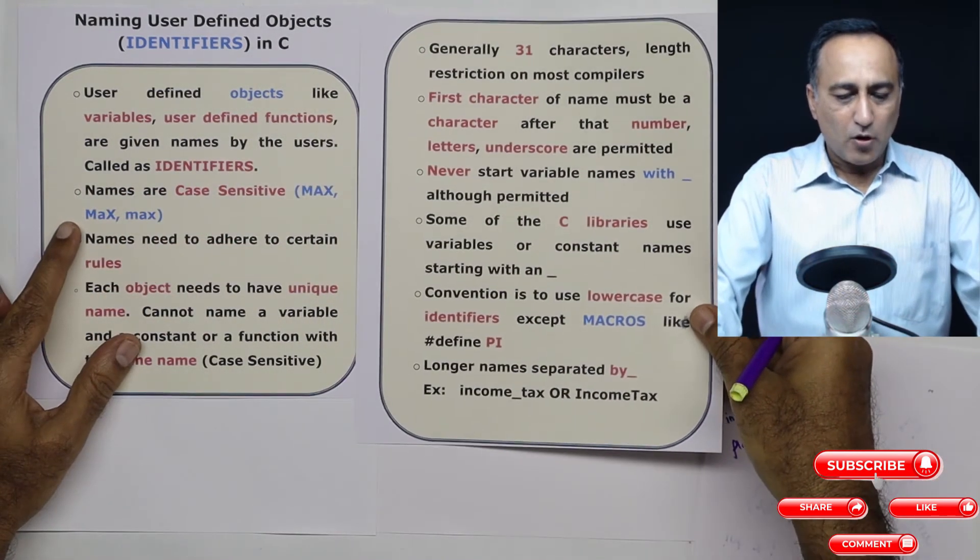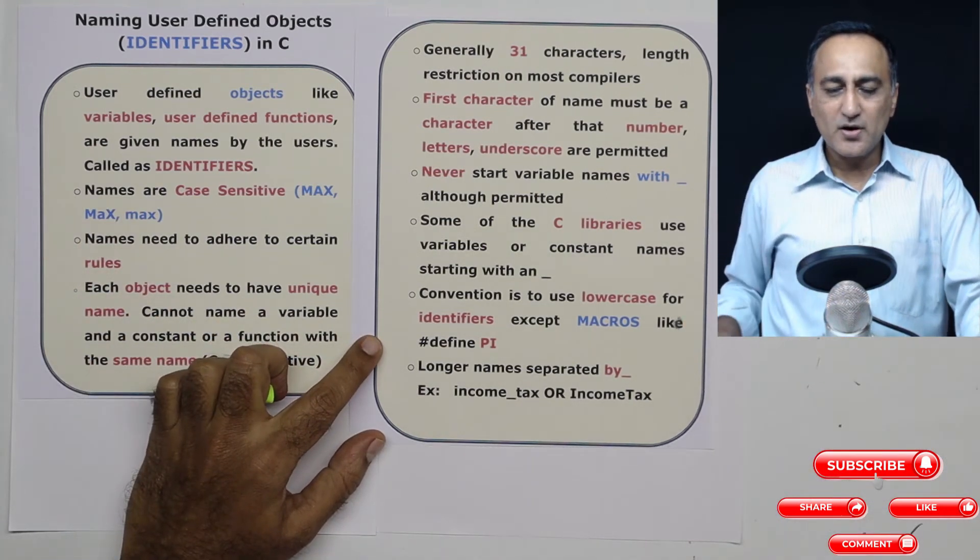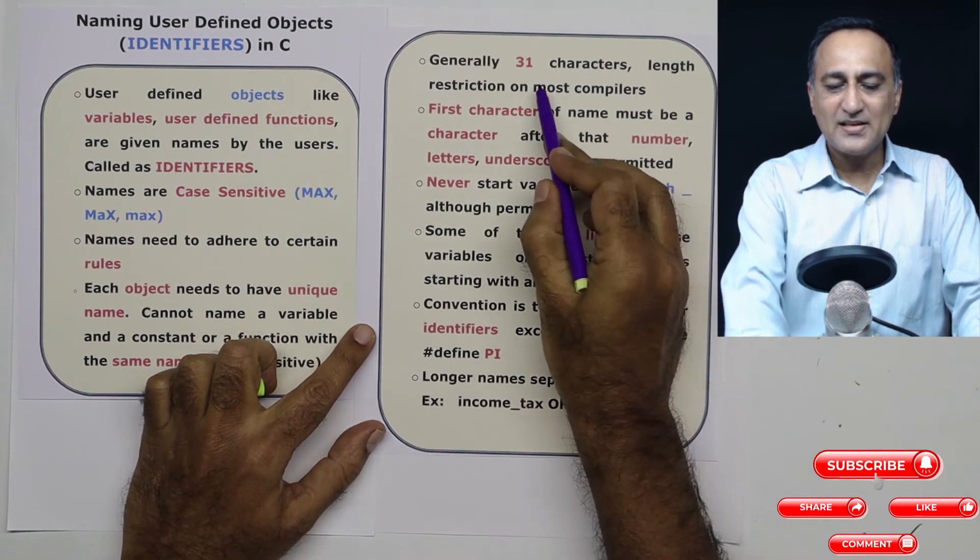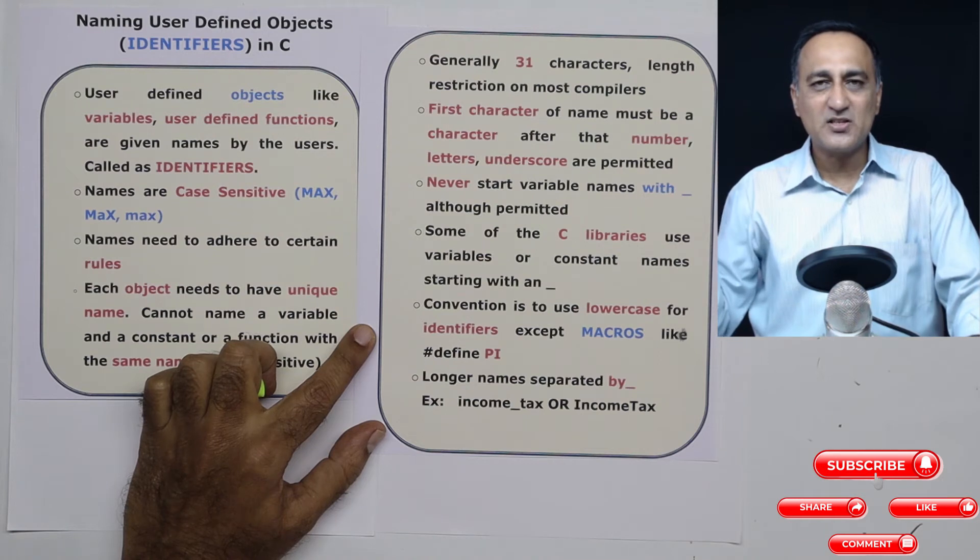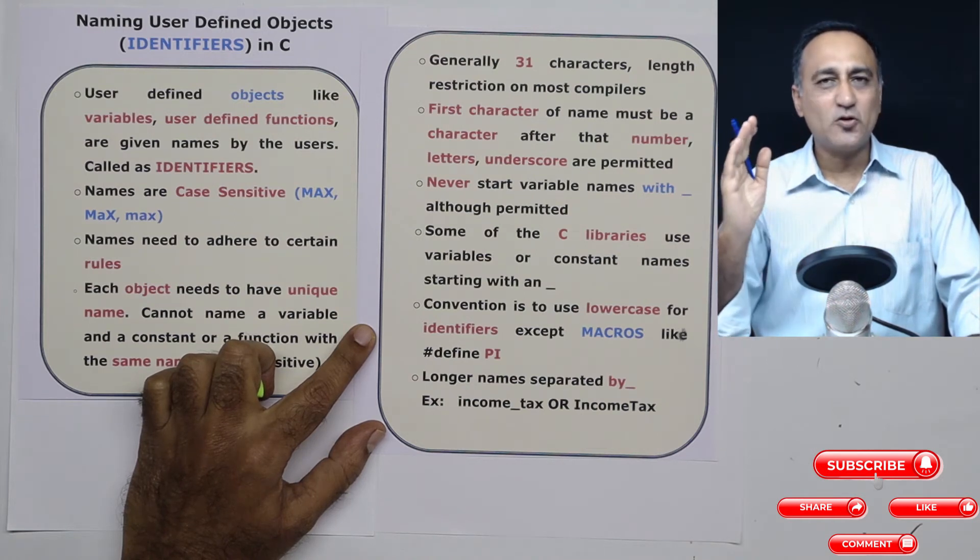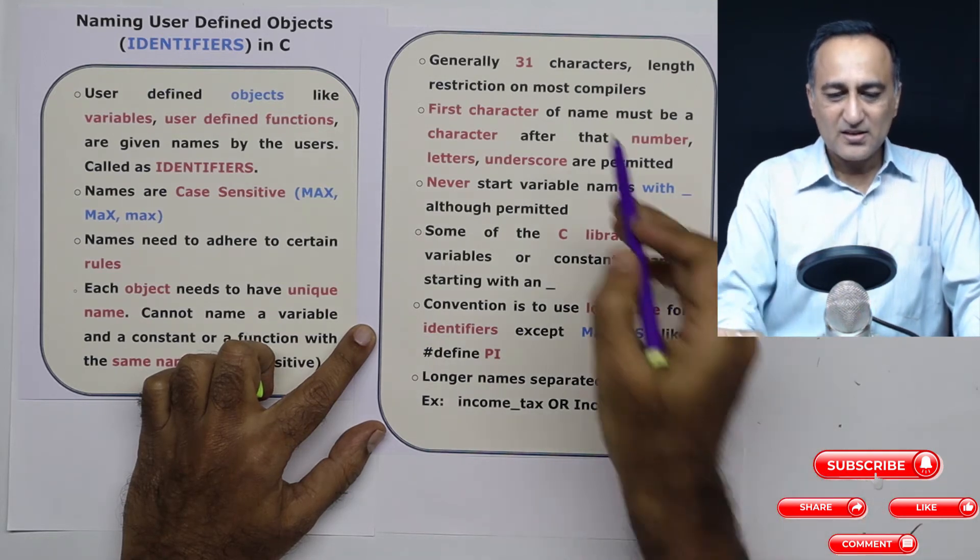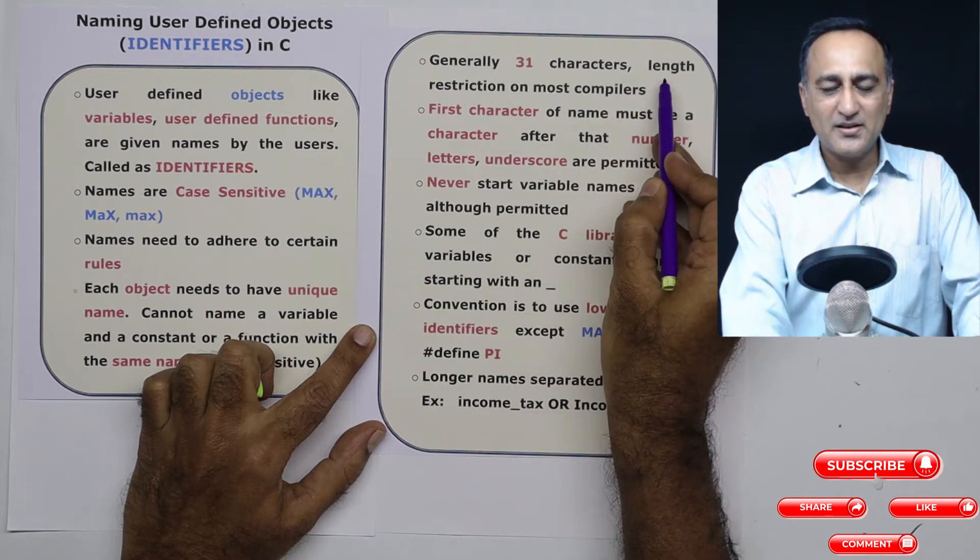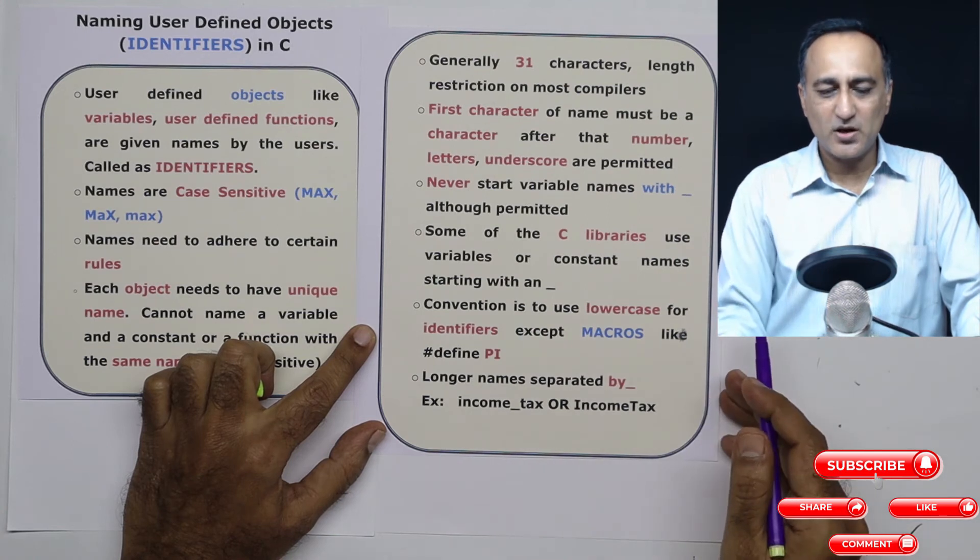Generally, all the C compilers which follow the ANSI standard will recognize the first 31 characters of a name as unique. If you write two variables with the same first 31 characters, you're going to get an error saying that both variable names are the same. This is the standard restriction on most standard compilers.